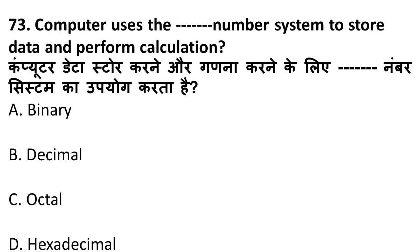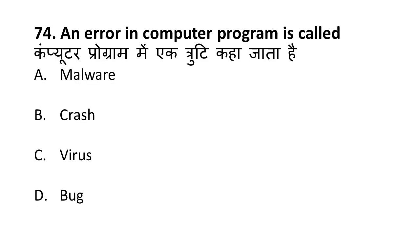Next question: computers use which number system to store data and perform calculations? The correct answer is the binary number system. An error in computer software is called a bug.